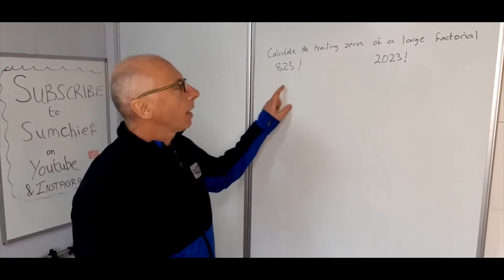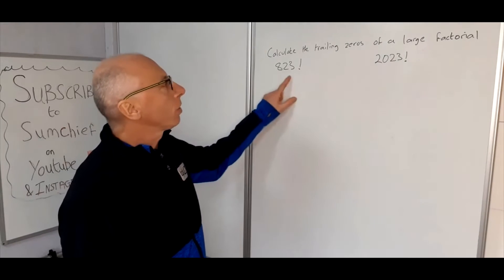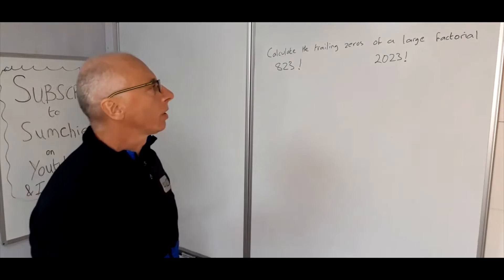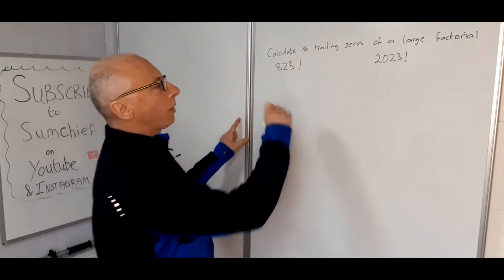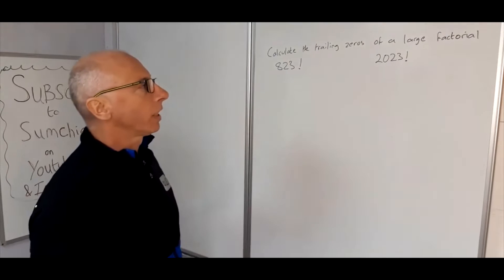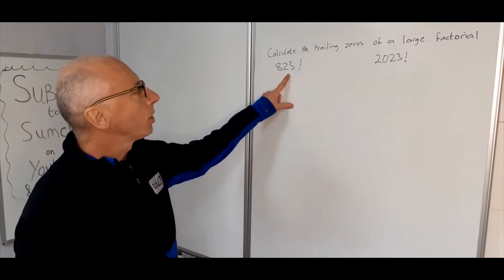Okay, so we're looking here at how to calculate the number of trailing zeros in either of these two very large factorial numbers. These numbers are going to be really massive, we won't be able to fit them on this board. 823 factorial is 2044 digits.